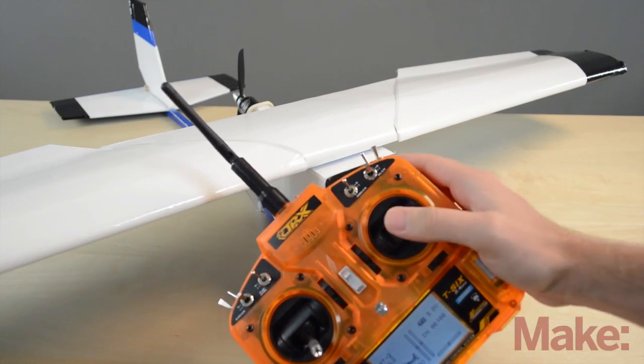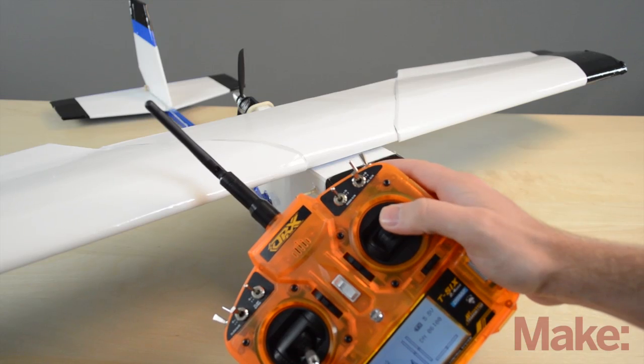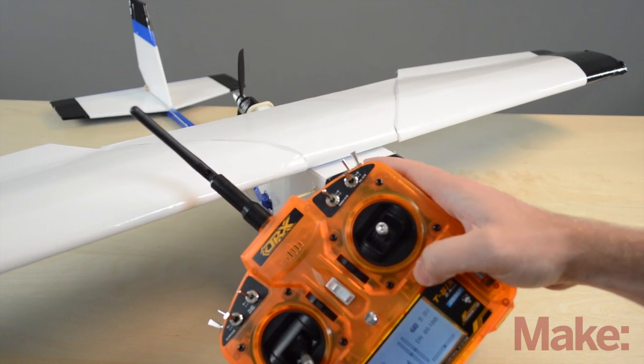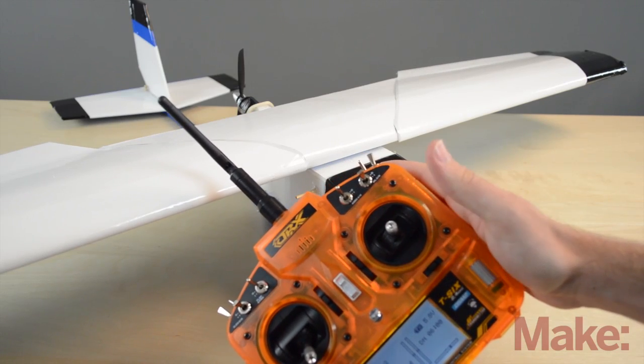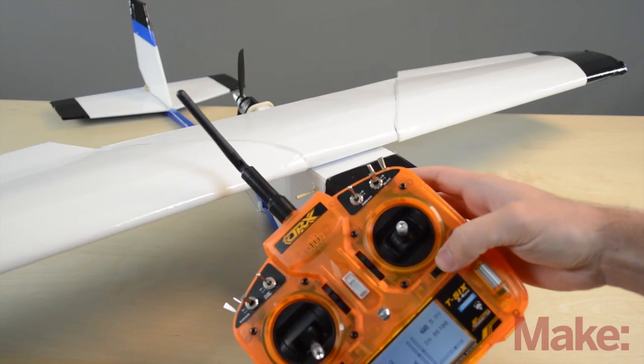So say if we're banking to one way and we always have to be holding it to the right, well then you can add right trim to it and it'll do the same thing as you holding it. So that's what trim does.